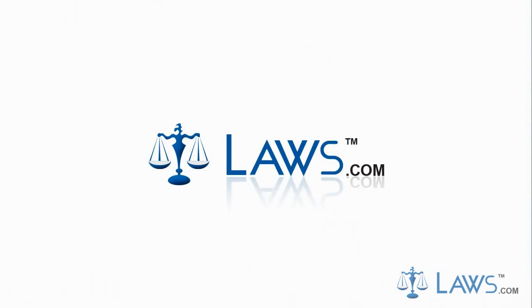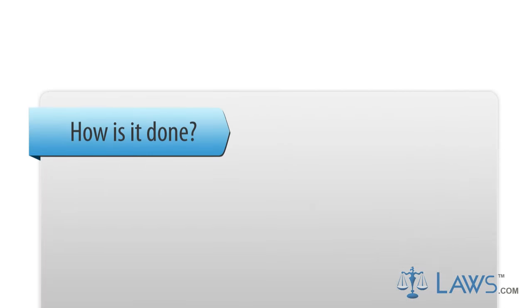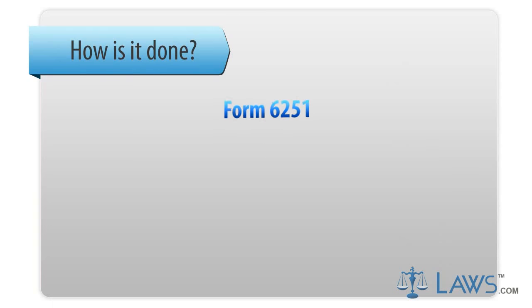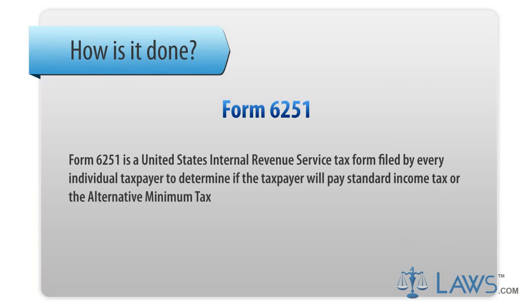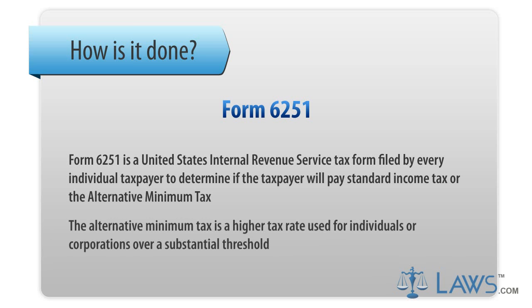Laws.com Legal Forms Guide. Form 6251 is a United States Internal Revenue Service tax form filed by every individual taxpayer to determine if the taxpayer will pay standard income tax or the alternative minimum tax. The alternative minimum tax is a higher tax rate used for individuals or corporations over a substantial threshold.